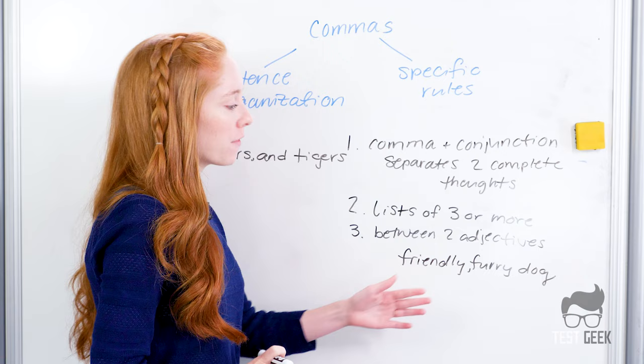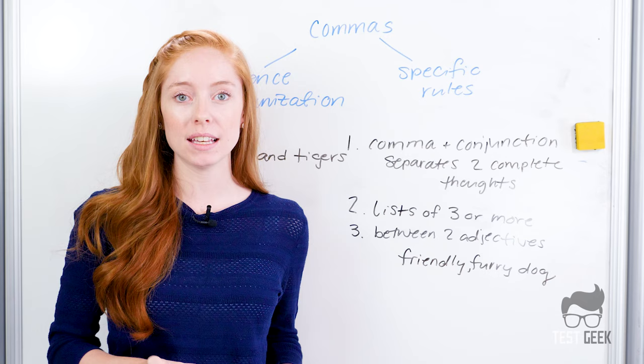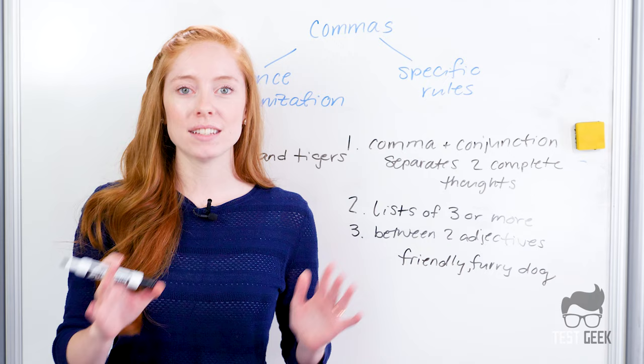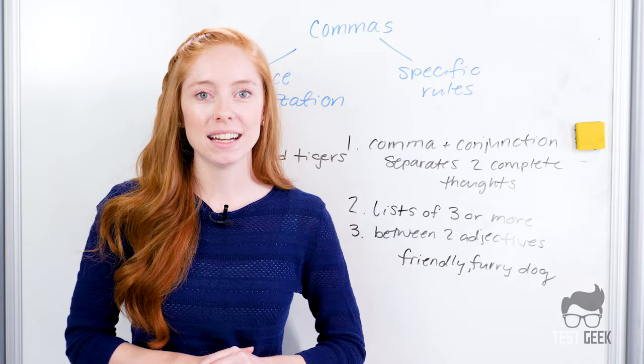Okay, so we're using two adjectives to describe the same noun. If we can switch these two adjectives and say the furry friendly dog, then we want to use a comma between these two adjectives. It tells the reader that we could switch these, and it means the same exact thing. Okay, so we've gone over specific rule commas and our sentence organization commas, and that's it.